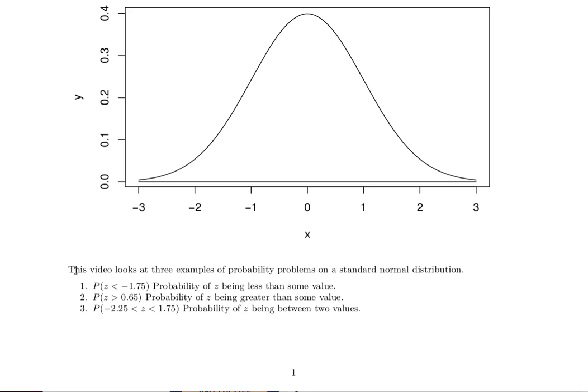So there it is, we've looked at these three types of probability problems: the probability that Z is less than some value, the probability that Z is greater than some value, and the probability that Z is between two values. Okay, hope that helps.